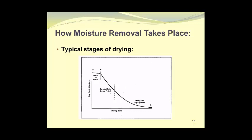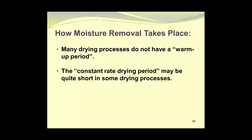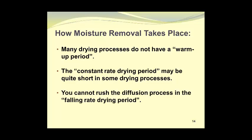As more moisture is removed, the rate of moisture removal becomes slower and slower. At point D, the rate is incredibly slow and the curve approaches a horizontal line, indicating that no more moisture is being removed. The constant rate drying period may range from only 30 minutes to two or three hours. You cannot rush the diffusion process in the falling rate drying period — this is where many people make a serious mistake.